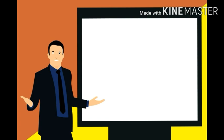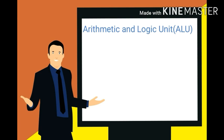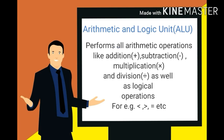The third part of the processing unit is ALU — Arithmetic and Logic Unit — which performs all arithmetic operations like addition, subtraction, multiplication, and division, as well as logical operations such as greater than, less than, equal to, etc.